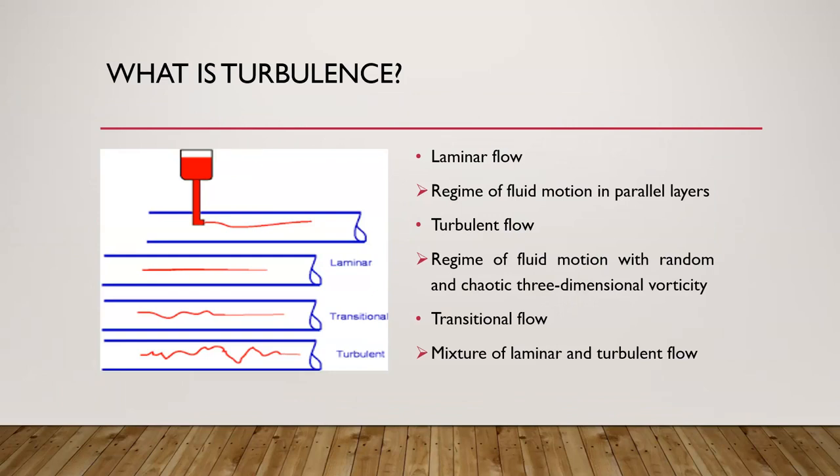Turbulent flow is the regime of fluid motion with random and chaotic three-dimensional vorticity. It leads to radical changes in flow character, and flow behavior is random and chaotic — velocity and all other flow properties vary in random and chaotic ways. Besides turbulent flow, there are two other types: laminar flow and transitional flow. Laminar flow is the regime where fluid moves in parallel layers in an orderly fashion. Transitional flow lies between laminar and turbulent, and can be called a mixture of both.